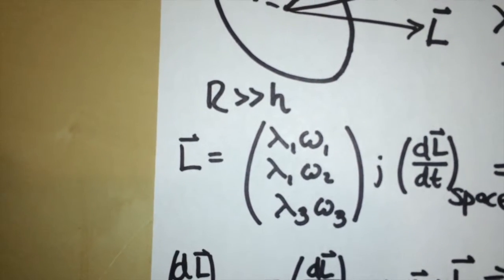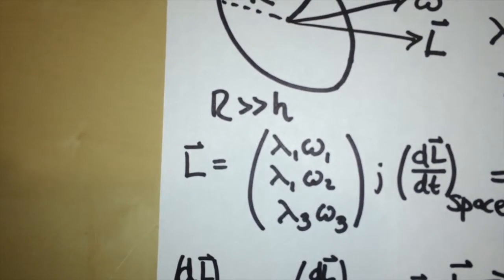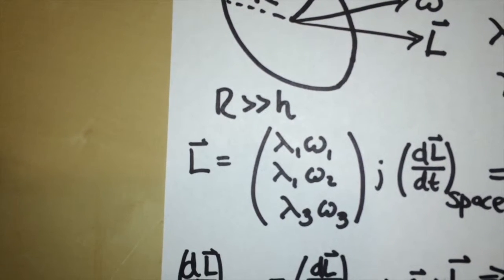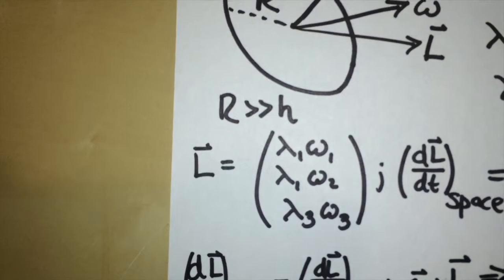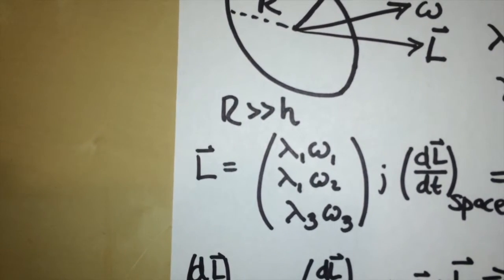With those moments, I get an angular momentum vector that looks like this, where omega 1, omega 2, and omega 3 are the three components of the rotation vector in the body frame, so the frame attached to the rotating disk.